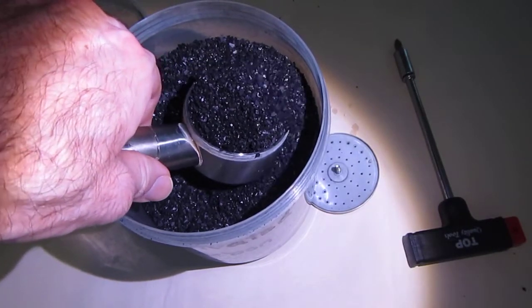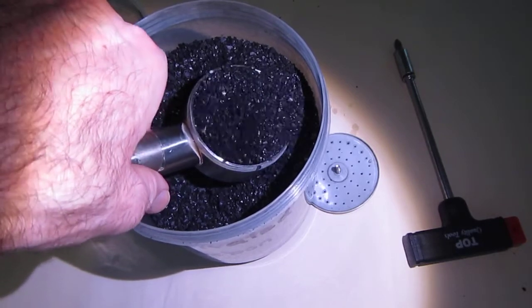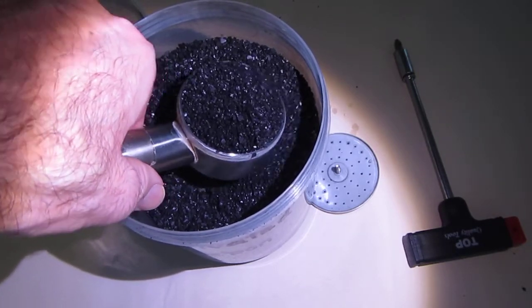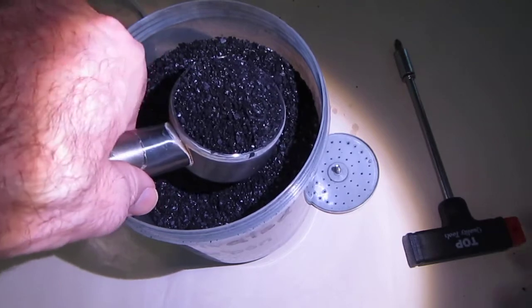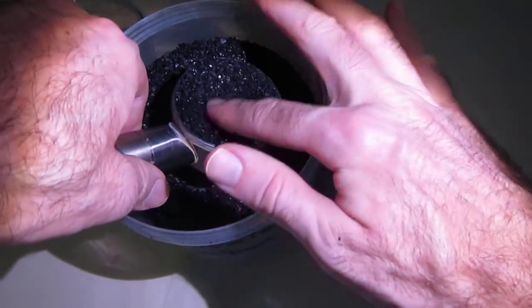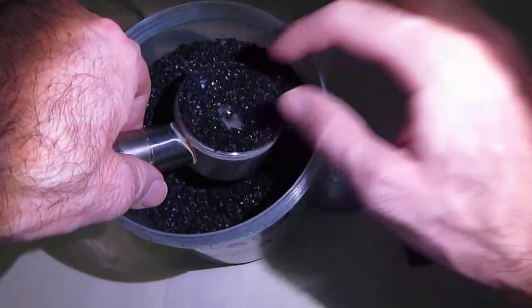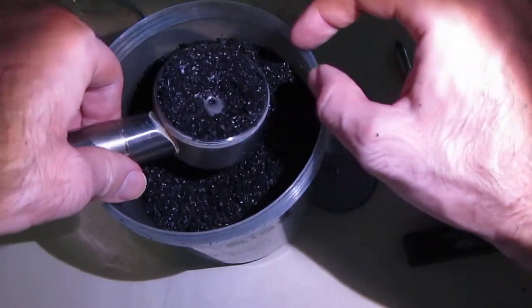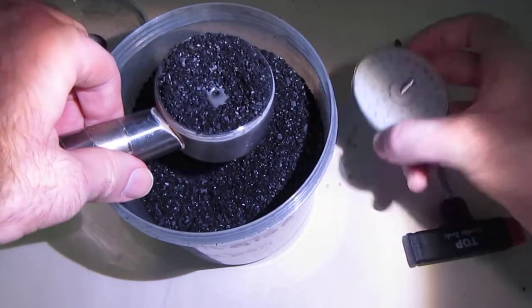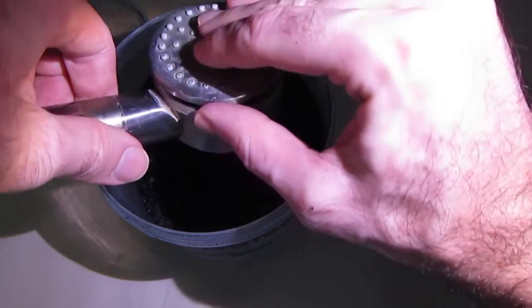And basically the idea is just that the nylon mesh prevents the carbon from back flowing into the pipes because obviously that wouldn't be a good thing. And if I can find the screw hole here. There we are. I'll be able to screw the top on like so.